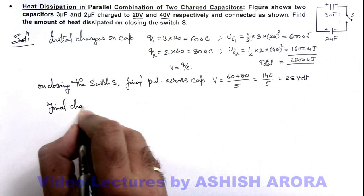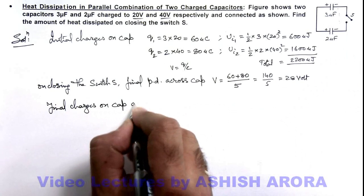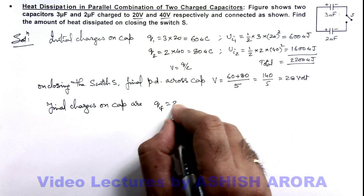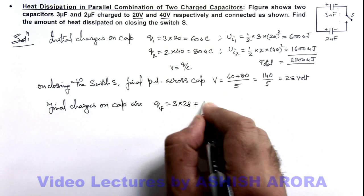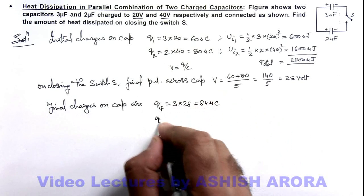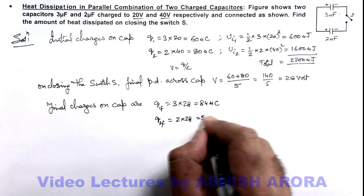Final charges on capacitors are: Q1 final is CV, that is 3 × 28 = 84 microcoulombs, and for the second capacitor, it is 2 × 28 = 56 microcoulombs.